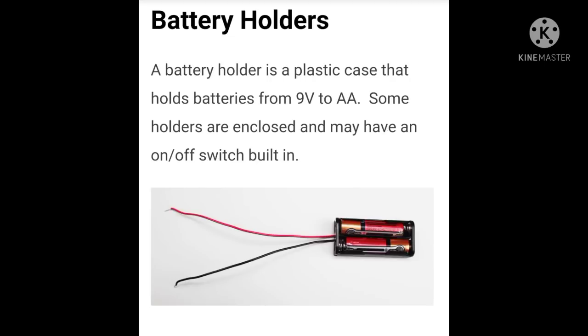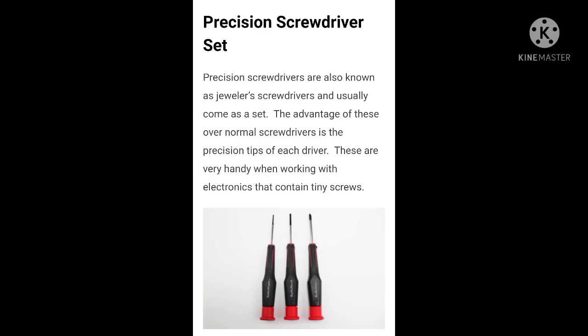Next, let us see the battery holder. A battery holder is a plastic cage that holds batteries, from 9-volt to AA. Some holders are enclosed. Next, precision screwdriver set — precision screwdrivers are also known as a jeweler's screwdriver and usually come as a set.